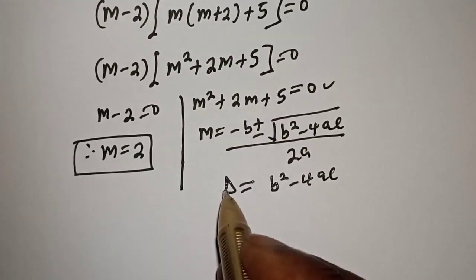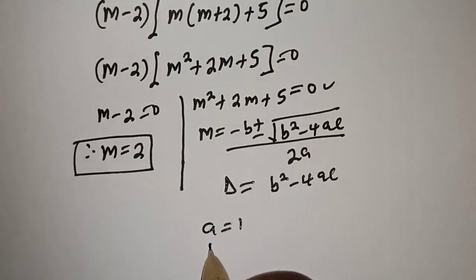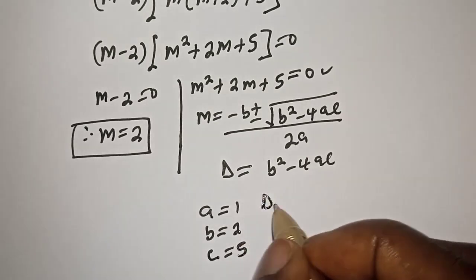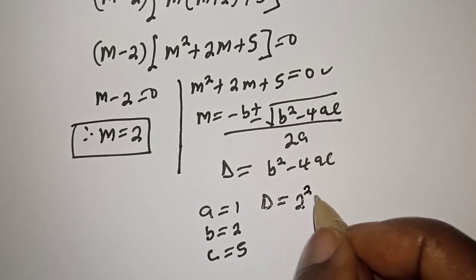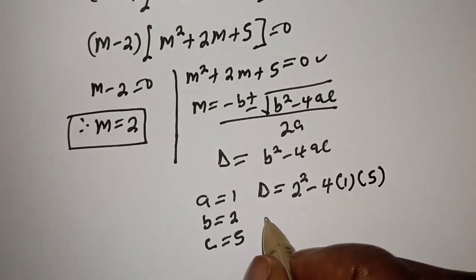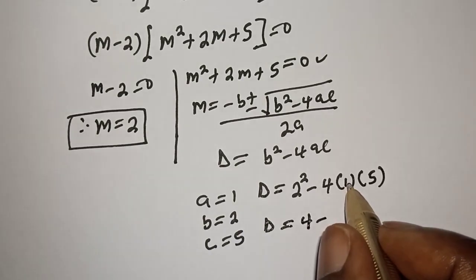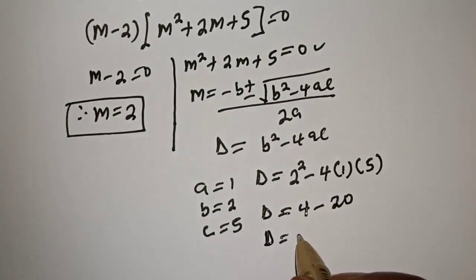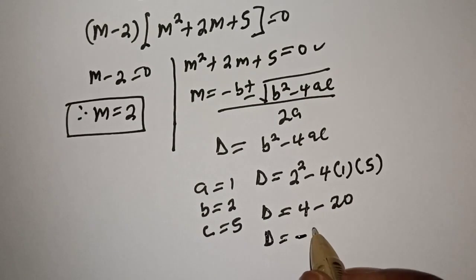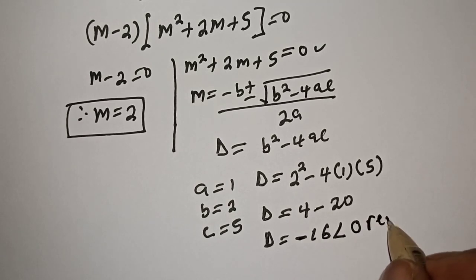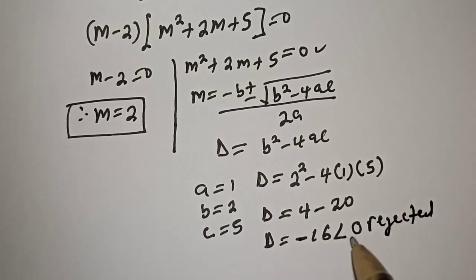From the equation, a equals 1, b equals 2, and c equals 5. Then D equals 2 squared minus 4 times 1 times 5, which is 4 minus 20, giving D equals negative 16. Since D is less than 0, this case is rejected as there is no real solution.